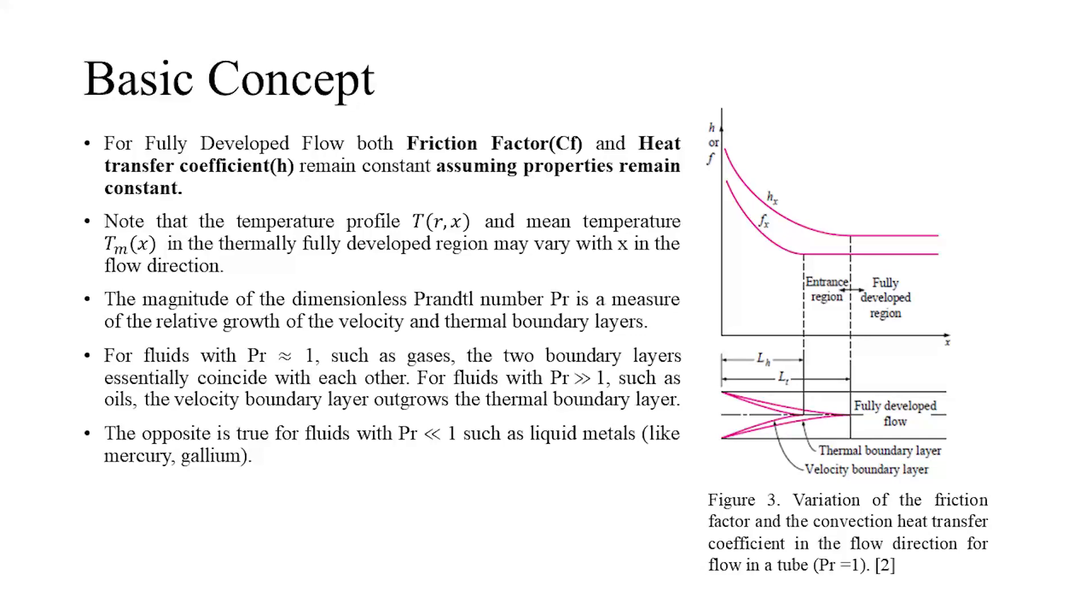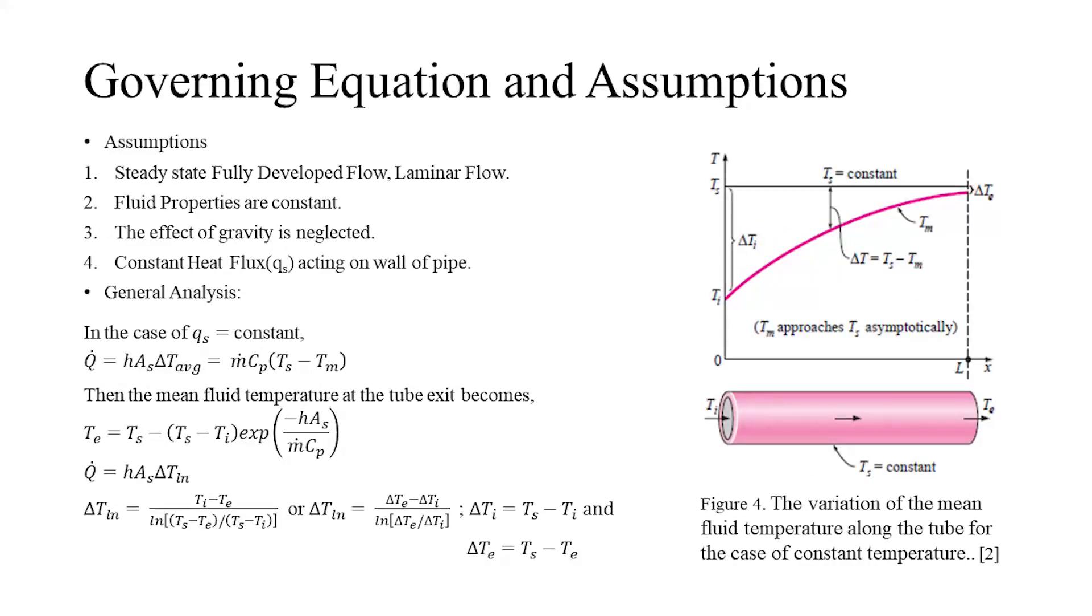The figure on the right shows the variation of heat transfer coefficient and the friction factor along the length of the pipe. Prandtl number is defined as momentum diffusivity to thermal diffusivity. For Prandtl number greater than 1, the thermal entry length is greater than the hydrodynamic entry length, while for liquids having Prandtl number less than 1, the thermal length is less than the hydrodynamic entry length. And for Prandtl number equal to 1, the thermal and hydrodynamic entry length are of same length.